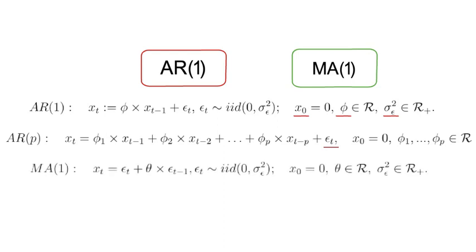Now analogously, an MAq process has the following data generating process, which I summarize in that equation here, with epsilon t being, again, a white noise process.